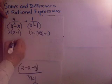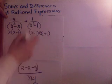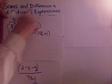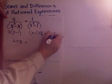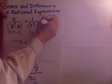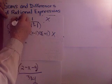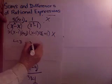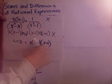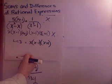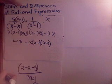What do you think the LCD will be in this one? It's going to be a combination of everything. So I need to multiply this by something and this by something. This one doesn't have an x, so I'm going to multiply it by x over x. This one needs an x plus 1 over x plus 1. So the LCD is x, x minus 1, and x plus 1. It's a combination of all the factors of the top and the bottom. I'm trying not to use too many multiples because I want it to be the smallest common denominator.